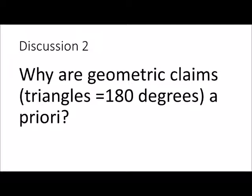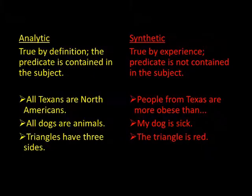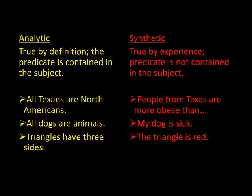To deepen our epistemology and explore these points more rigorously, let's turn to the next distinction: analytic versus synthetic. Immanuel Kant clearly explained that analytic propositions are those in which the predicate is contained in the subject. For example, 'All bachelors are unmarried' is analytic because the predicate 'unmarried' is contained in the subject 'bachelor.' You can think of analytic statements as those that are true by definition.